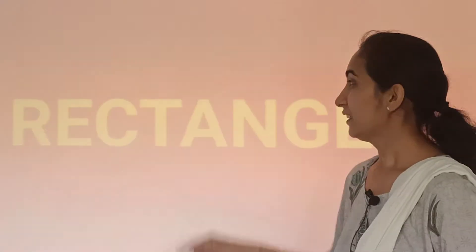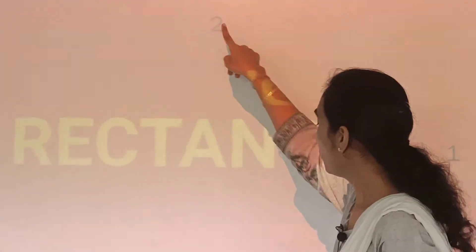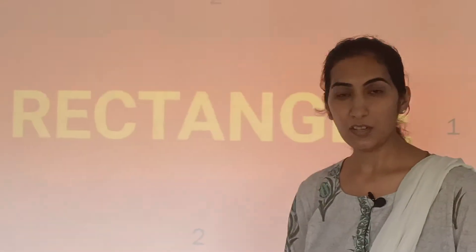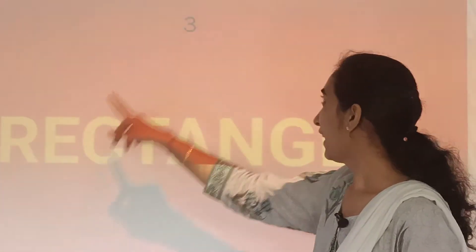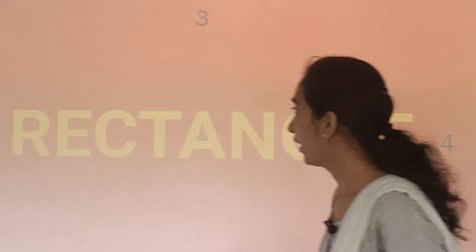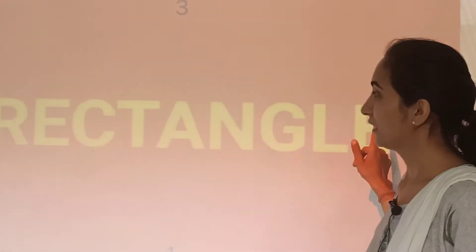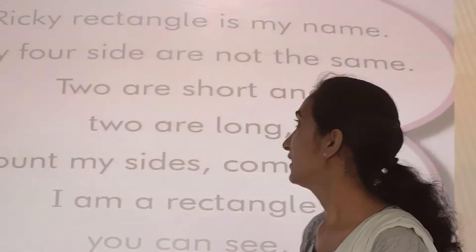'Licky rectangle is my name, my four sides are not the same. See, two are short, two are long. Count my sides, come along. I am a rectangle, you can see, I have four sides, count with me.' See — one, two, three, and four! Right. Now you have to repeat with me. Will you? Yes, see it on the board.